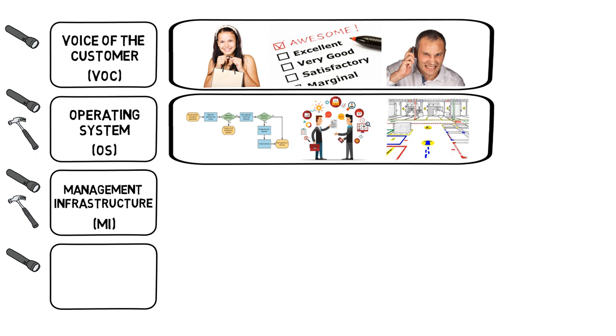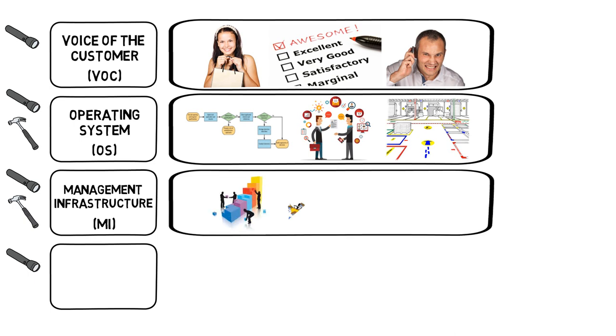Management infrastructure, MI, focuses on how people are managed in order to deliver their best possible performance. This pillar is like a bridge between operating system and the last pillar of Lean.